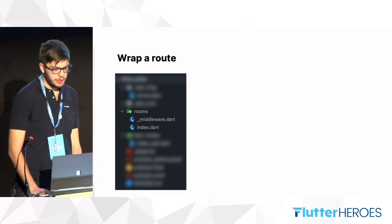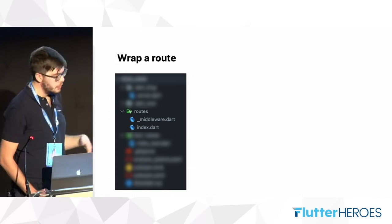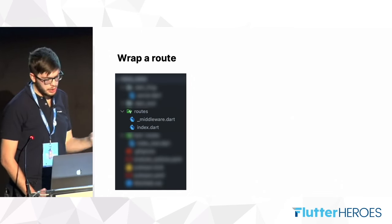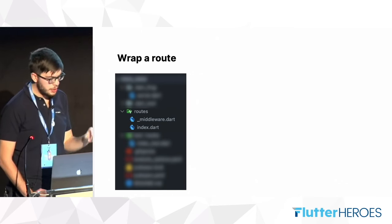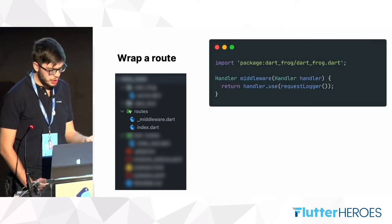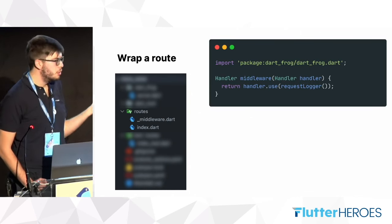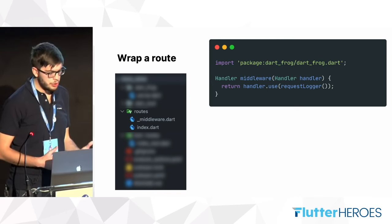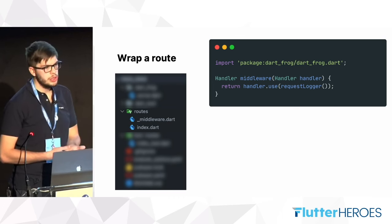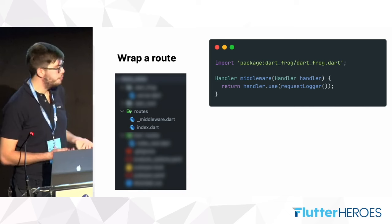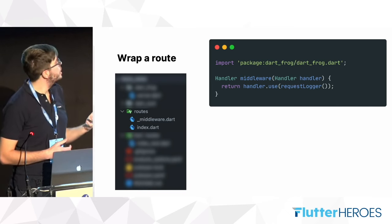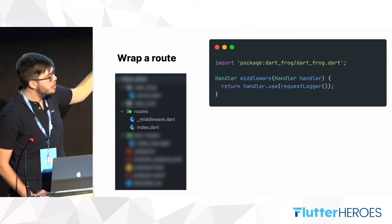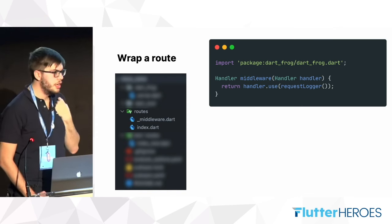Another feature inside Dart Frog is middleware. To use middleware, we add the _middleware.dart file, and inside we define a function named middleware. This function is very useful because it allows us to execute code before and after the handler. The handler you see as input to this method is the handler defined inside the index file.